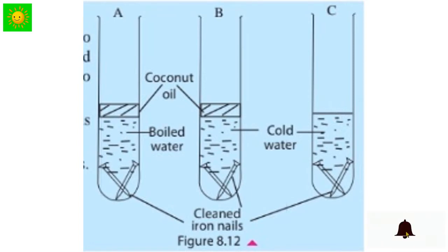Next, take equal volumes of cold water into two other test tubes and put a clean iron nail into each. Put an oil layer to one of them as in setup B.